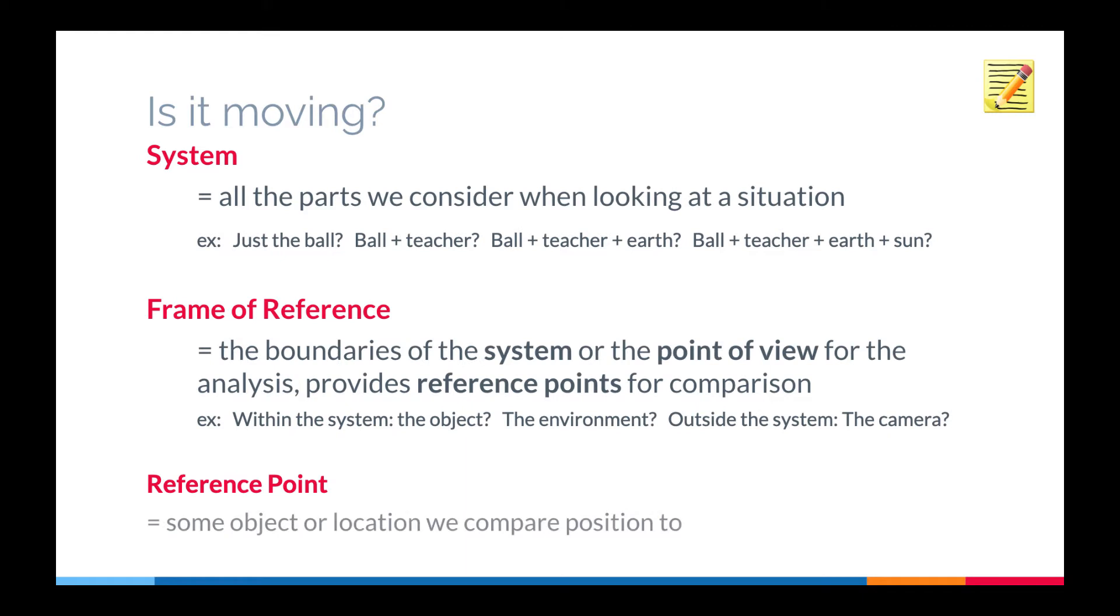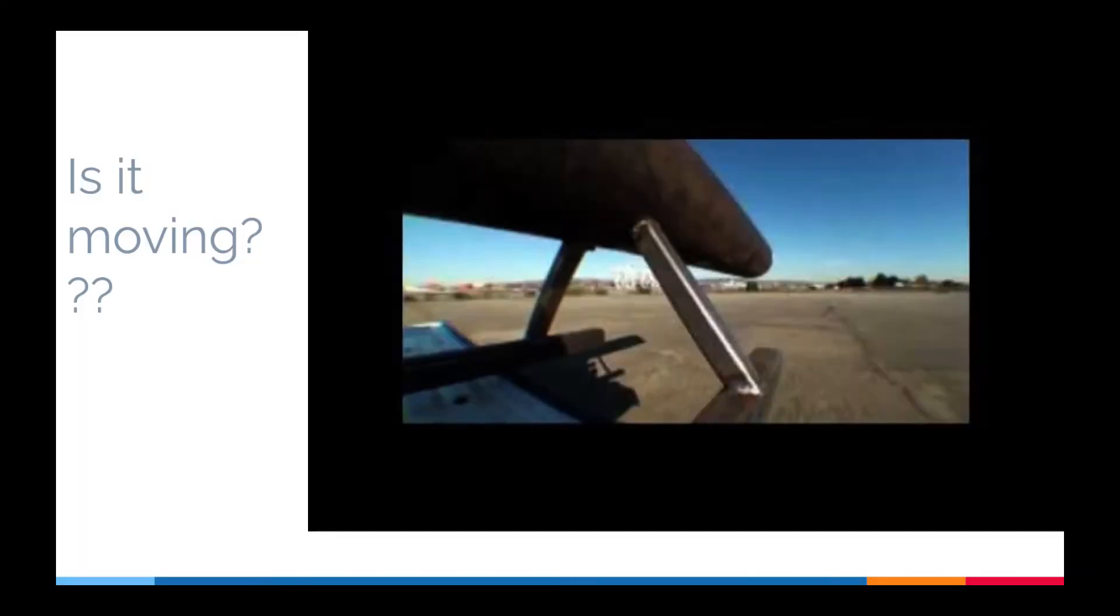Now the frame of reference provides the boundaries. Think of a picture frame, and everything within this picture frame would be your system. So it's your point of view of the system. And this gives us reference points that we can use to compare position against. So for example, if I throw a ball up in the air, I become a reference point for the ball. And if you're observing, you're going to see that the ball is changing its distance from me, which is going to tell you that the ball is moving.